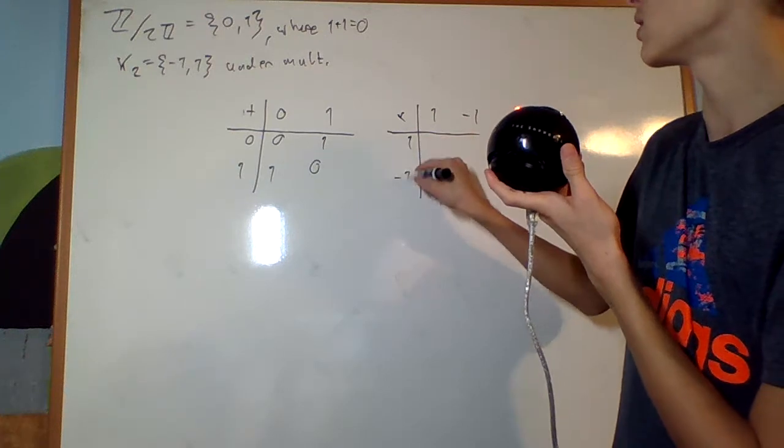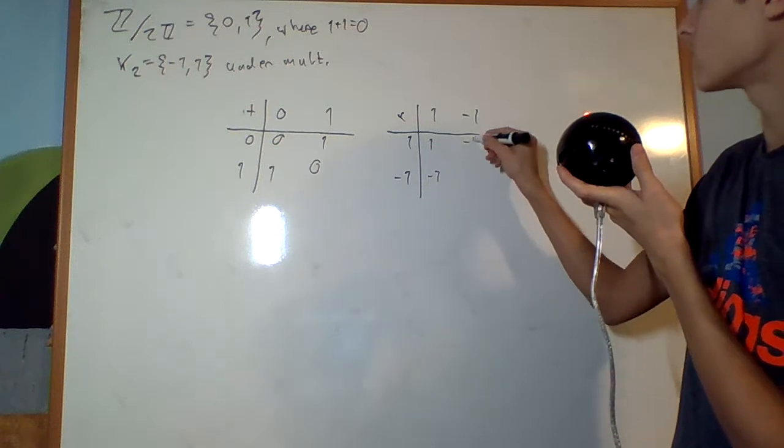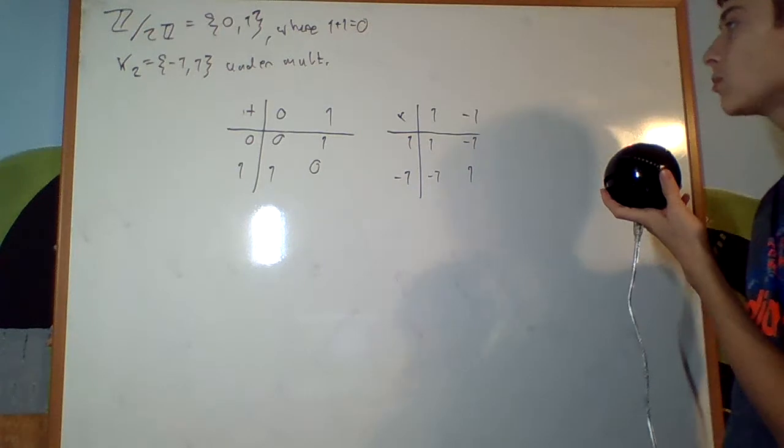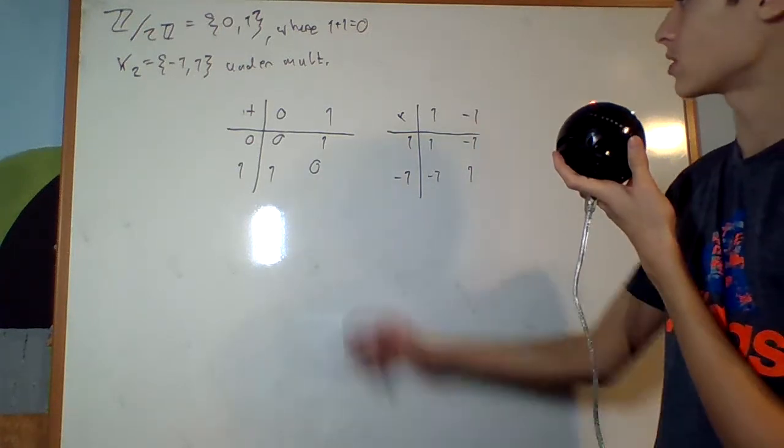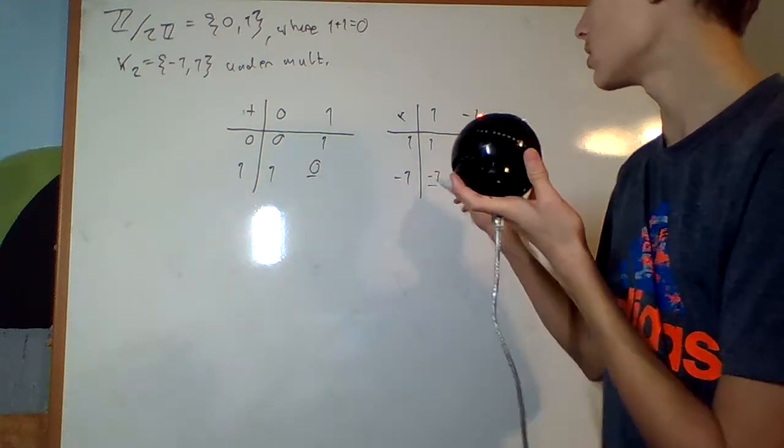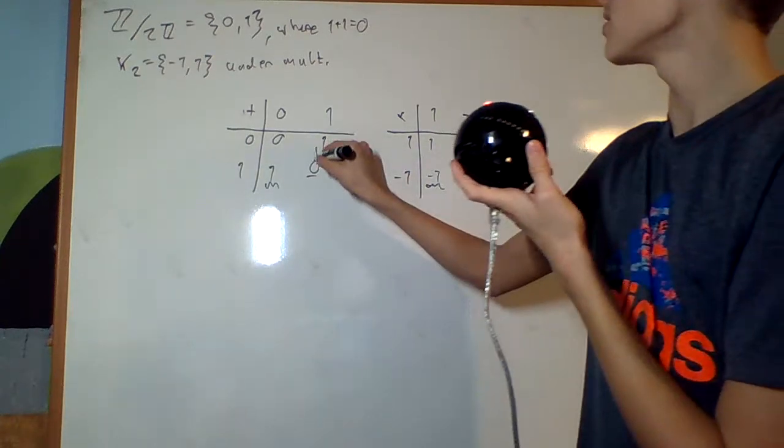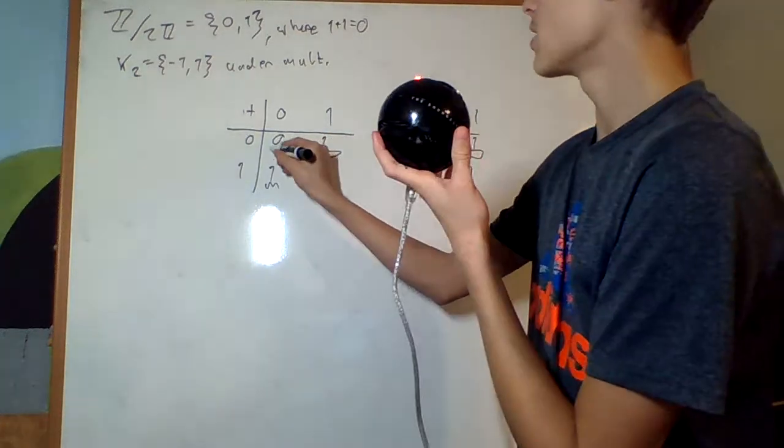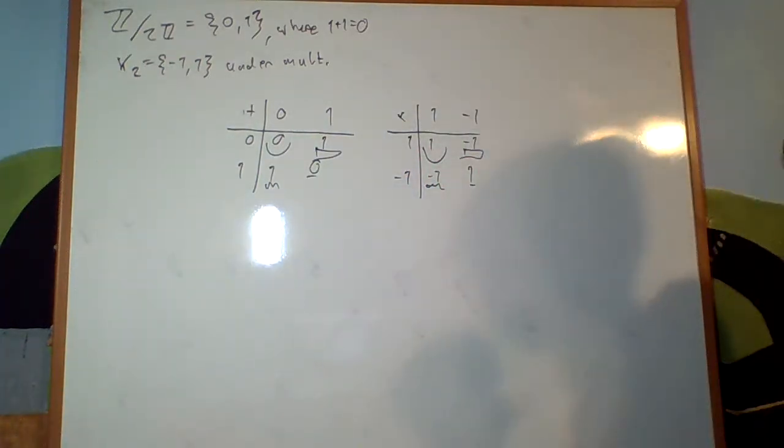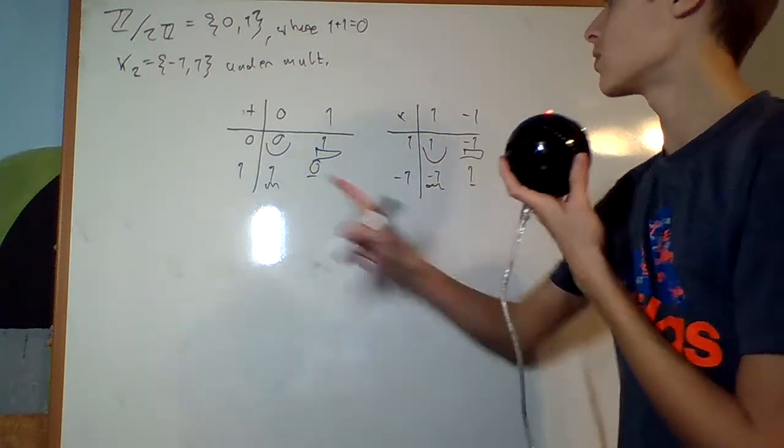Okay, now multiplication under the Klein 4 group. 1, negative 1. 1, negative 1. What's 1 times 1? 1. 1 times negative 1, negative 1. 1 times negative 1, negative 1. Negative 1 times negative 1 is 1. You can see this almost exactly matches this one. They all match up. 1 goes to 0, 1 goes to 0, negative 1 goes to 1, negative 1 goes to 1.